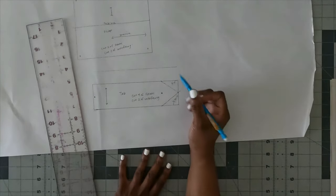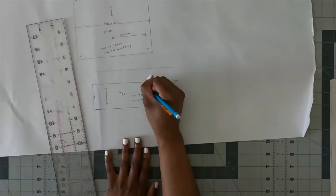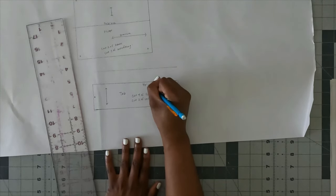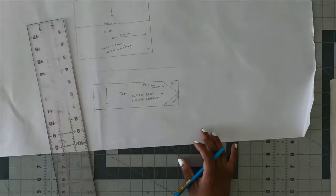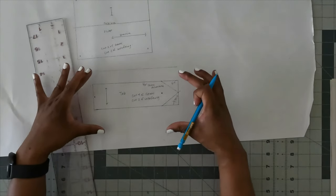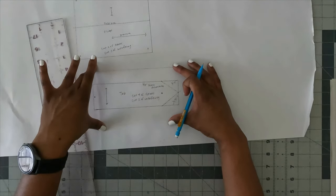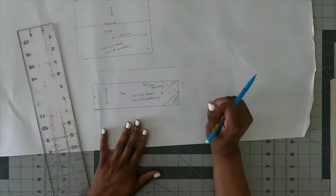Now make sure that for this tab, you use three eighths of an inch seam allowance. You do not want to use five eighths on the tab because it will be too small and I don't want a small seam allowance for my tab.